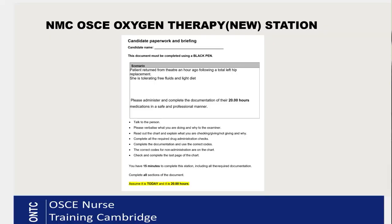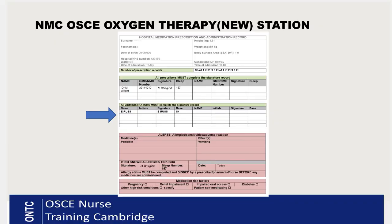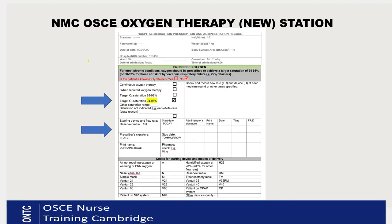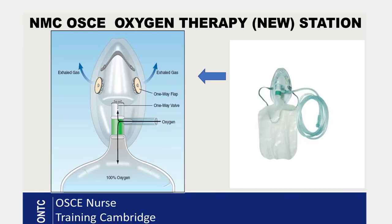You will be given a prescription within the MAR chart. The front page tells you the date and time your oxygen therapy is due to start. The second page contains patient details, ID details, and allergy status, which you need to check during the station. The third page is where oxygen therapy has been prescribed and you must check the validity of the prescription. Equipment-wise, you choose the reservoir mask and tubing.